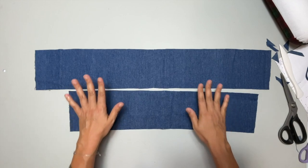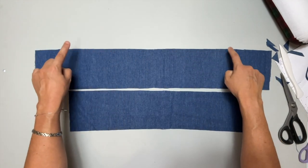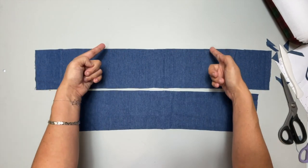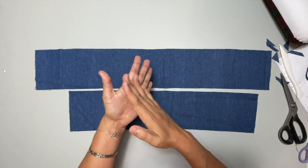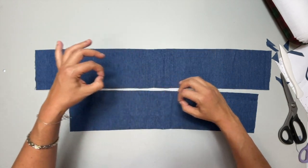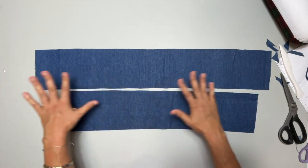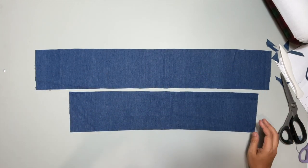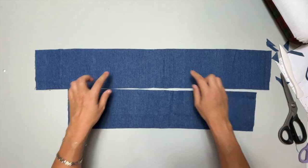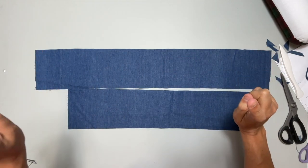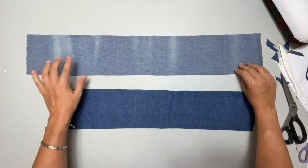This is another one of my little tricks, but to go ahead and pre-press this up. That way when we go to attach it to the pants, this part is already done. We don't have to press it in the round. It's just a lot easier to press it flat.